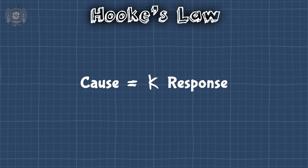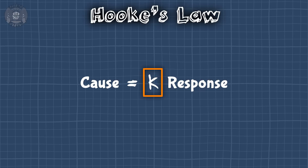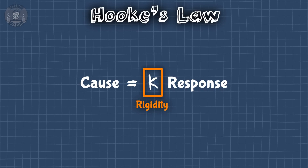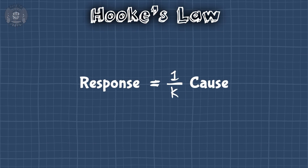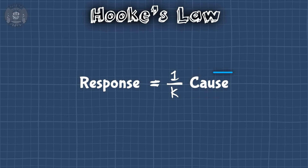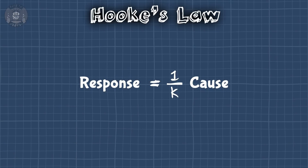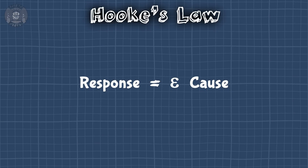Just like with springs, this constant measures how rigid the material is — it's the rigidity. Isn't that the opposite of what we want? Let's take that constant and put it on the other side. That way the equation takes us from the cause to the response, as it should be. We'll call 1 over rigidity the elasticity, just to make our lives easier.